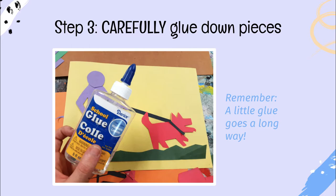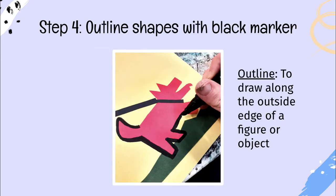Next, cut out your shapes and place them on a background sheet of construction paper. Carefully glue down your pieces — remember, a little glue goes a long way; I've given you a glue stick to keep it less messy. Then outline your shapes with black marker, which is very characteristic of Keith Haring's work.